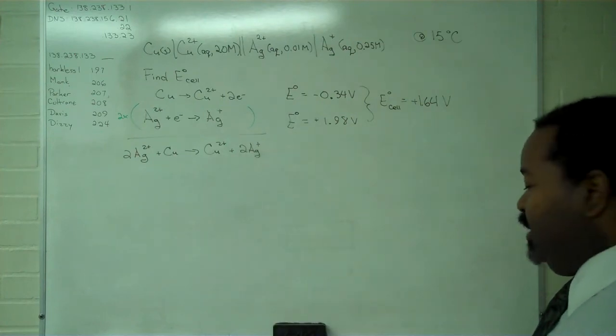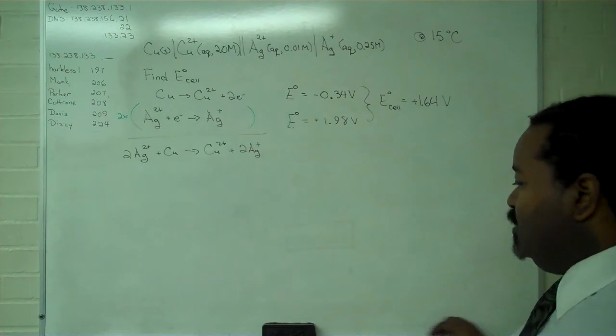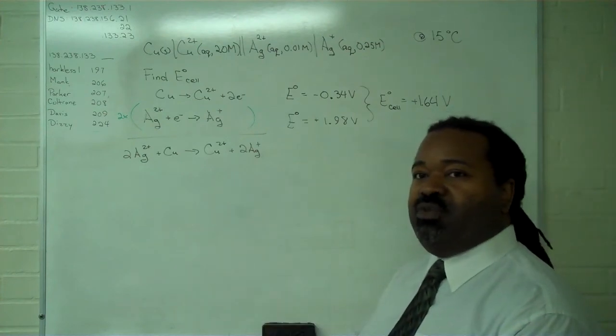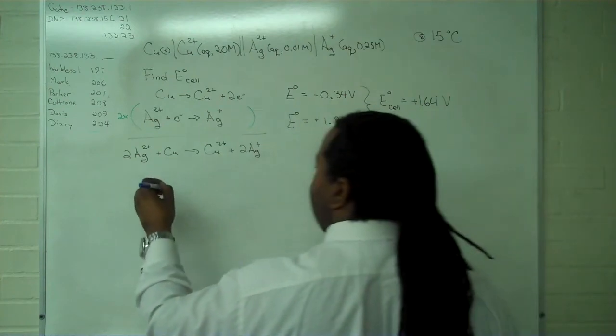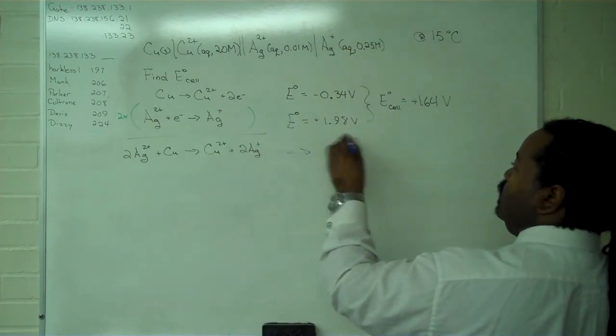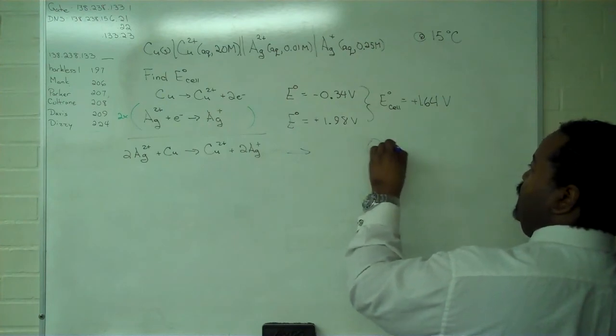Now, once we have this, we have to refer back to how we find reaction quotients. So the form of Q, we'll write this here, where we're collecting everything we need.